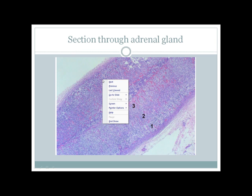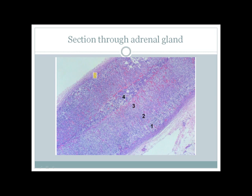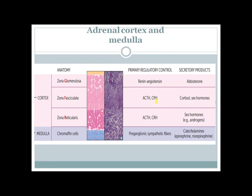Let's start with a look at the adrenal gland. This is a section through the adrenal gland. The adrenal gland is divided into two parts: the outer part is called the adrenal cortex and the inner part is the adrenal medulla. The cortex is subdivided into three layers: the outer layer is called the zona glomerulosa, then the middle layer is zona fasciculata, and the innermost layer is called the zona reticularis.